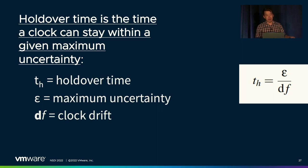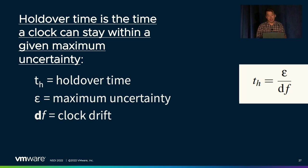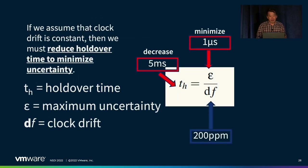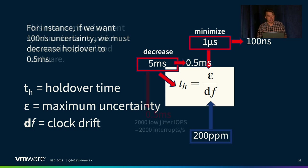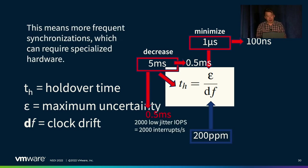Armed with the ability to measure time, we then tried to formalize what we were trying to improve on — what we call holdover time. Holdover time is the amount of time a clock can remain accurate without exceeding some uncertainty bound. If we assume clock drift is really bad, our only option is to reduce this holdover time. To go down to 100 nanoseconds of uncertainty with a microsecond-scale clock, we'd need to decrease holdover time to 0.5 milliseconds, meaning we have to synchronize every half millisecond — requiring 2,000 low-jitter I/O operations per second and interrupting the CPU 2,000 times a second.